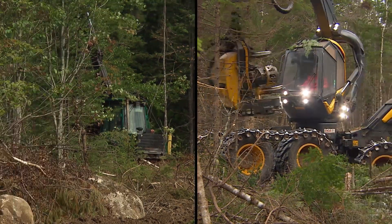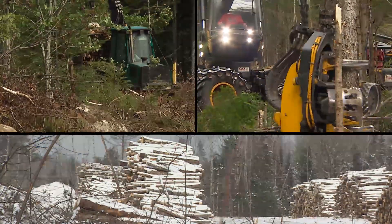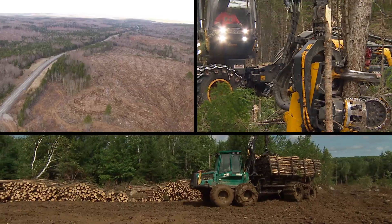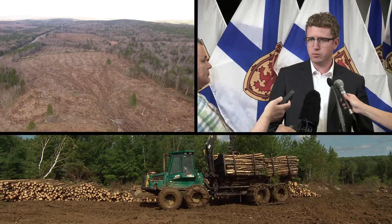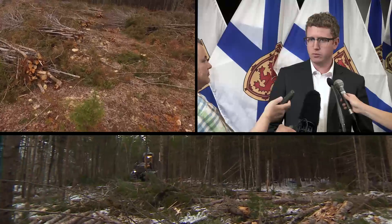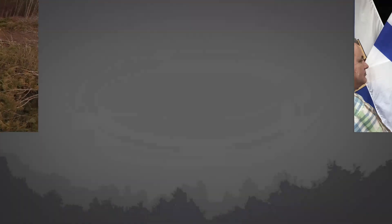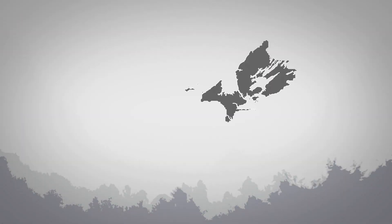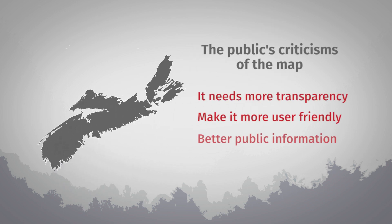There's another element in question: accountability. Private companies that respond to the public's comments are not accountable to the public, and there's no way to know if anyone from the government reads the concerns. If there is a concern that's elevated beyond routine questions on a harvest plan, then our staff are engaged and they do monitor every question that comes into the map viewer. Nova Scotia taxpayers own the province's Crown land, and so many people have called for more transparency, a user-friendly map, and a better way to inform the public about tree cutting on Crown land.